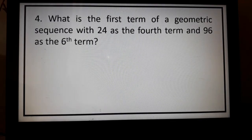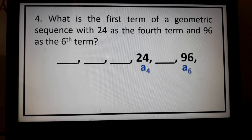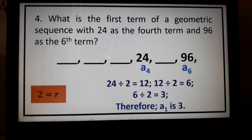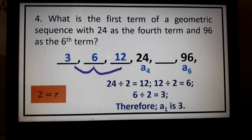Going back to problem number 4, we have A sub 4 and A sub 6. Using the common ratio of 2, divide repeatedly: 24 divided by 2 gives us 12, 12 divided by 2 gives 6, and 6 divided by 2 gives 3. So our first term is 3.